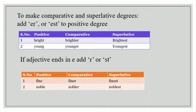To make comparative and superlative degrees, add ER or EST to positive degree. For example, bright. We add ER to it and it becomes brighter and superlative is brightest. One more example, young and comparative will be younger and superlative youngest.